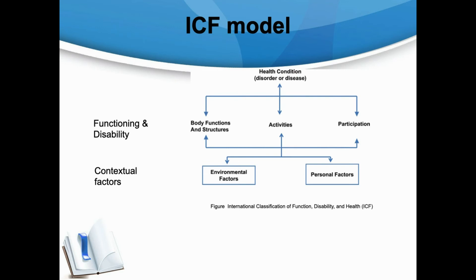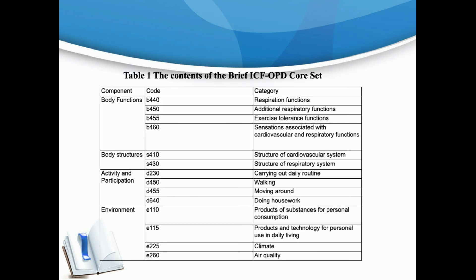The brief ICF code set has been widely used in various fields to evaluate function, and a number of major assessment sets have been developed. This code set plays an important role in guiding clinical nursing and rehabilitation work. The first brief ICF code set for obstructive pulmonary disease patients was developed consisting of four components and 14 categories.